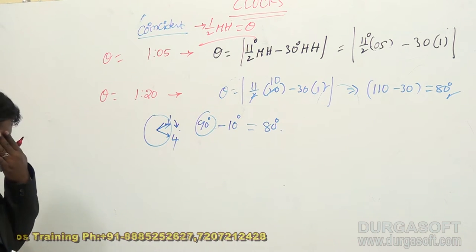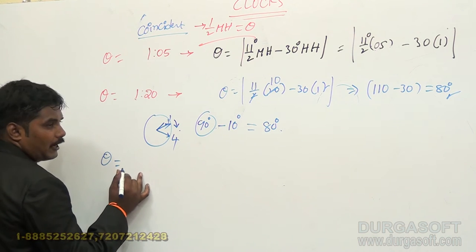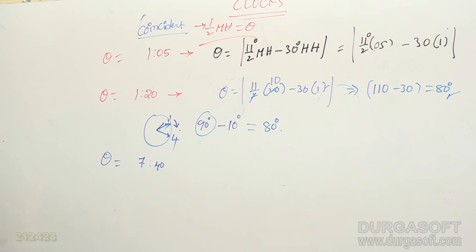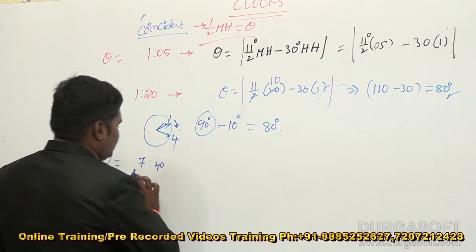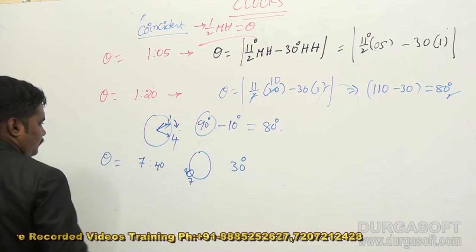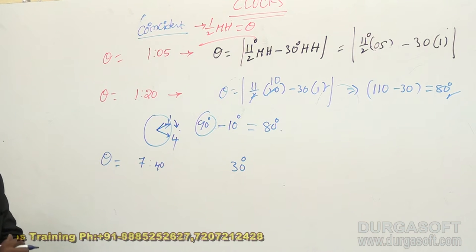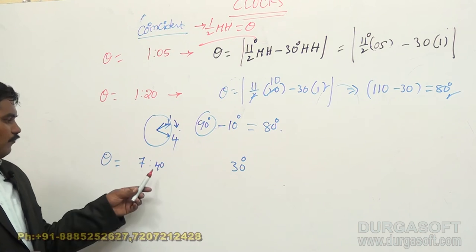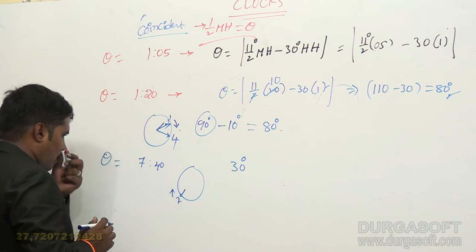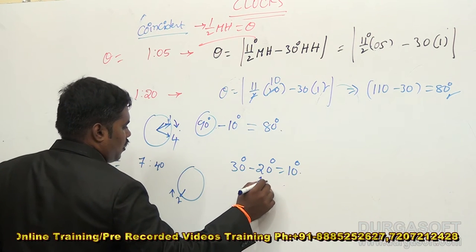Another question: find the angle for the time 7:40. At 7, between 7 and 8 there is one sector — initially 30 degrees. In 40 minutes, the hour hand covers 20 degrees — half of 40. In this case, the hour hand moves towards the minute hand direction by 20 degrees, so you get the answer 10 degrees. Half of 40 gives 20, and 30 minus 20 is 10 degrees.